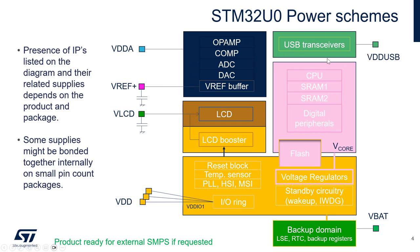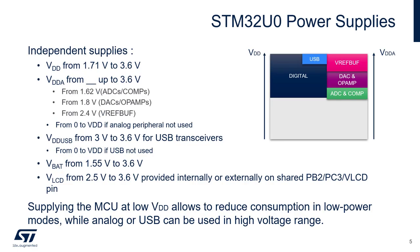Here is the USB domain — this is for the USB transceivers. It has its own pin, VDD USB, to power it. According to the spec, you need a minimum voltage of 3 volts for it. So you can have VDD running at 1.8 V and your VDD USB at 3 V to be within spec.